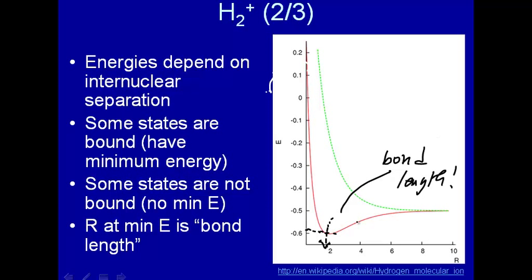And then it goes back up again. So it turns out there's a sweet spot right here, where the distance between the two nuclei is just right to give a minimum energy, and that will be the bond, we'll call that the bond distance.